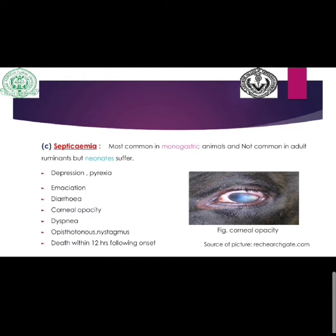Septicemia is the most common form in monogastric animals and is not common in adult ruminants, but neonatal ruminants can suffer because their rumen is not properly developed. Animals with septicemia show depression, pyrexia, diarrhea, corneal opacity, dyspnea, opisthotonos, and convulsions. Death may occur within 12 hours following onset of signs.